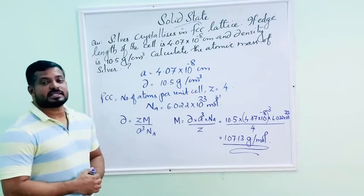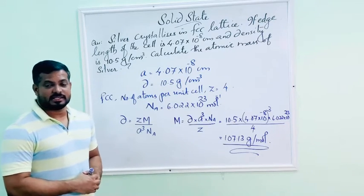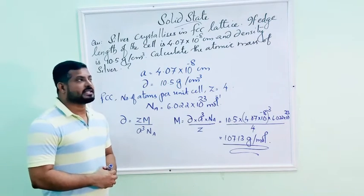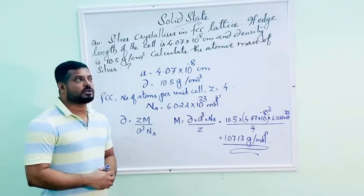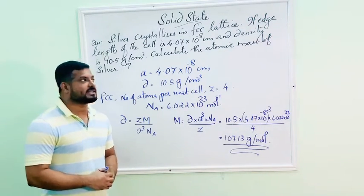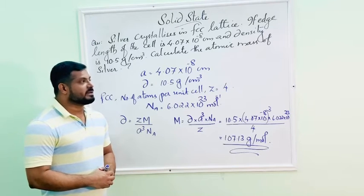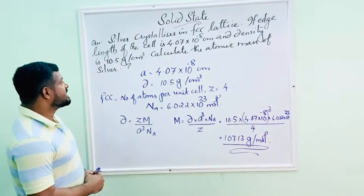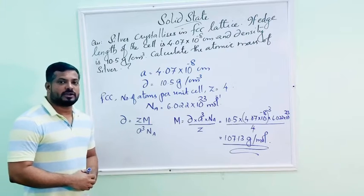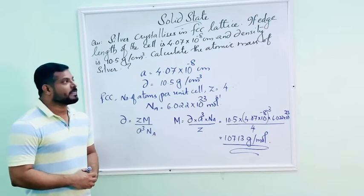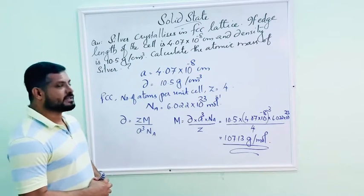Silver crystallizes in FCC lattice. If edge length of the cell is 4.07 into 10 raise to minus 8 centimeter and density is 10.5 gram per centimeter cube, calculate the atomic mass of silver.